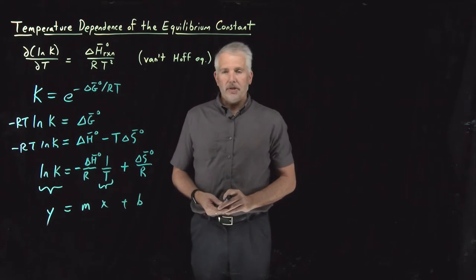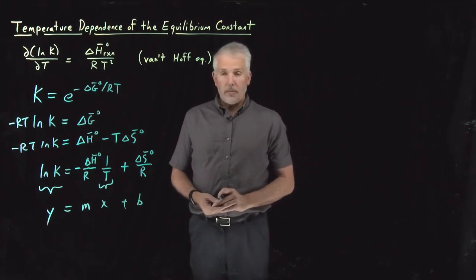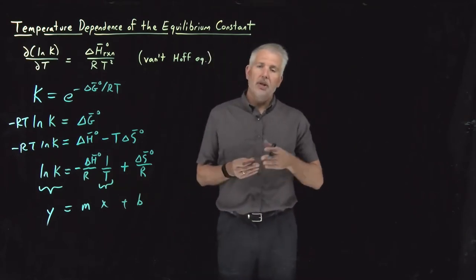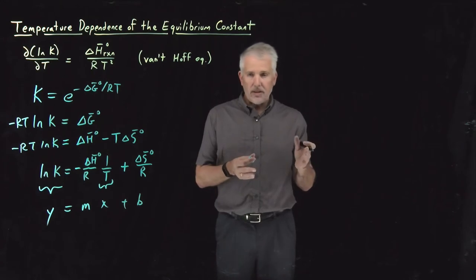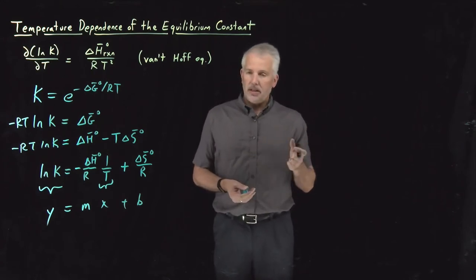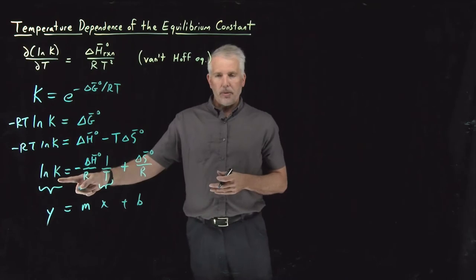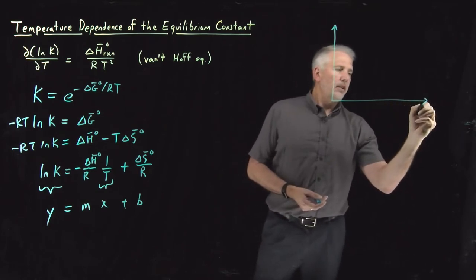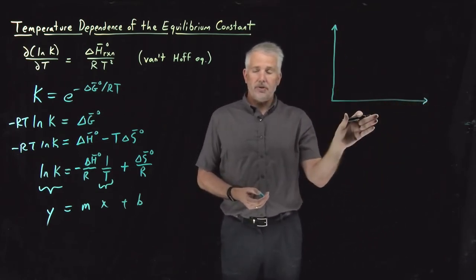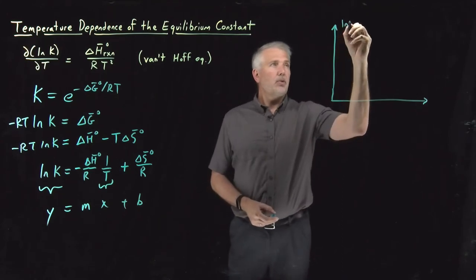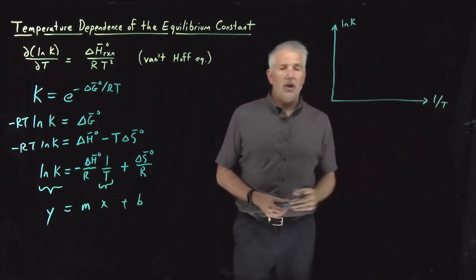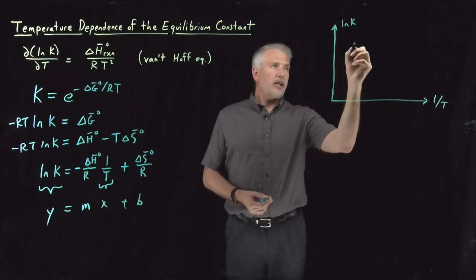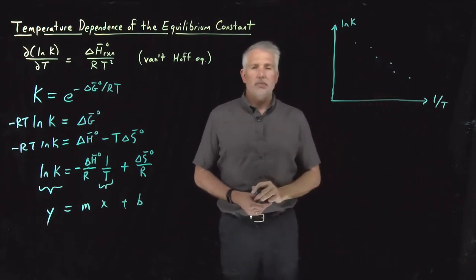This is very suggestive. If we want to experimentally understand how the equilibrium constant depends on temperature, we can run a reaction at one temperature, measure the equilibrium constant, change the temperature, measure another equilibrium constant, and so on. Rather than graphing K versus T, this equation suggests it's more useful to graph log K versus 1/T.